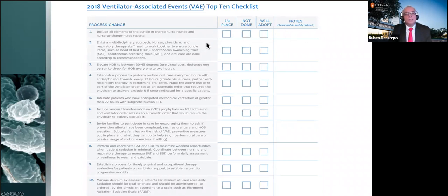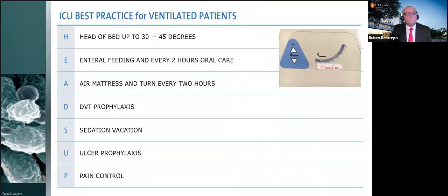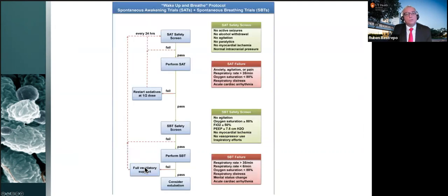In order to accomplish the prevention of VAEs and VACs, it takes a lot of documentation and a very well-organized team. One example is: head of bed 30 to 45 degrees, enteral feeding, every two hours of oral care, air mattress and turning every two hours, DVT prophylaxis, sedation vacation, ulcer prophylaxis — which remains controversial — and pain control. For every single tool you implement, there's an algorithm you can find.